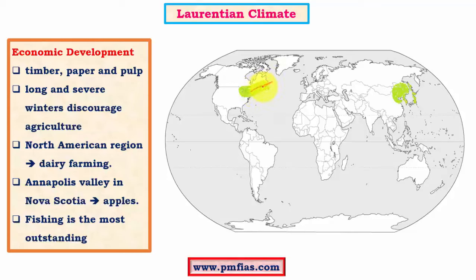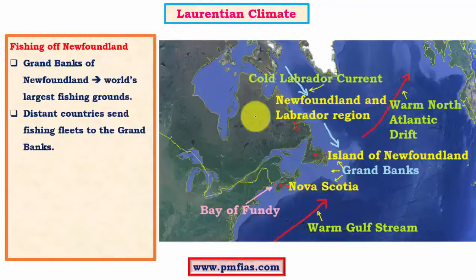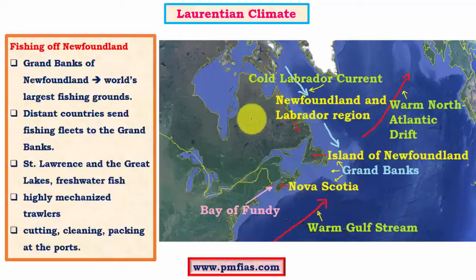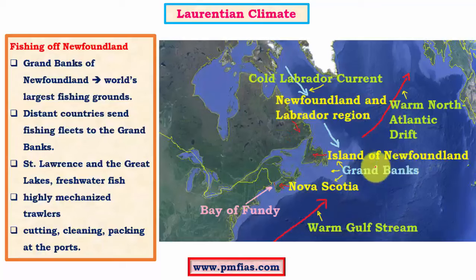From this region, paper and pulp products are exported to the rest of the world. Canada is very important in producing paper and pulp and exports some of the finest newsprint globally. The Great Lakes region and St. Lawrence waterway greatly help the export of timber materials. Agriculture is less significant mainly because of severe and long winters, which discourage agricultural activities. Most of the region depends on dairy farming and fishing for economic income. The Annapolis Valley in Nova Scotia is famous for apples exported to tropical regions.